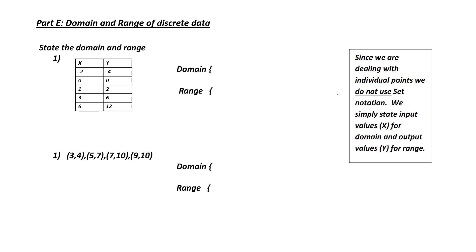Finally, domain and range of discrete data. Remember, discrete data is data we would not join together in a line — it is individual points. Since we're not dealing with a range of values, but rather specific points, all we have to do is list those points. For domain, it's a listing of the x values: negative 2, 0, 1, 3, 6. For range, it's a listing of the y values: negative 4, 0, 2, 6, and 12. Notice we do not say x is a subset of all real numbers, because it's not — it is specific points.